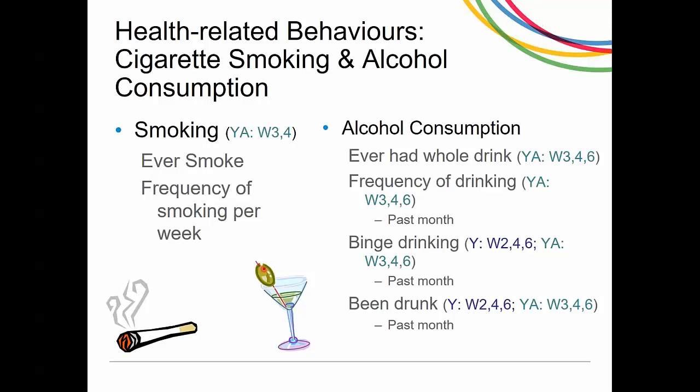The next questions are commonly asked of both groups about cigarette smoking and alcohol consumption. For smoking, they are asked whether they ever smoke and the frequency of smoking per week — asked every year for youth but only in Wave 3 for young adults. For alcohol consumption, they are asked whether they've ever had a whole drink, their frequency of drinking within the past month, whether they've ever binged, and whether they've been drunk in the past month. Both groups are asked whether they've ever been drunk in the past month.